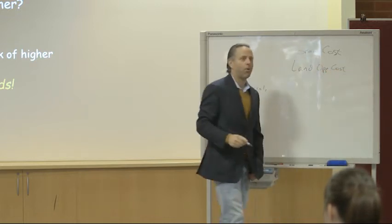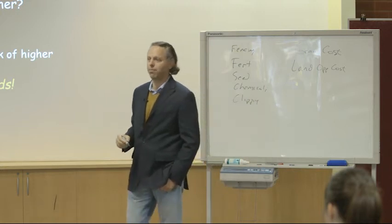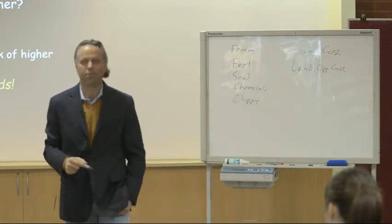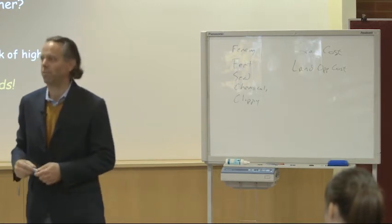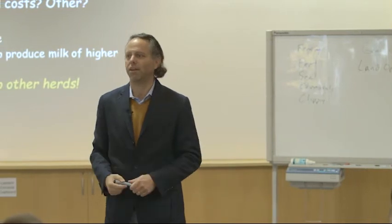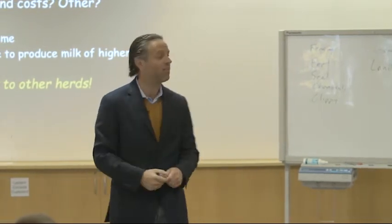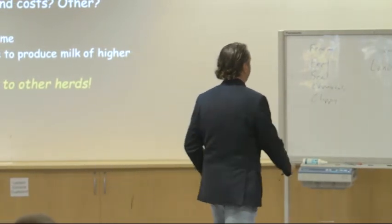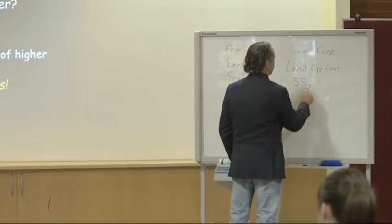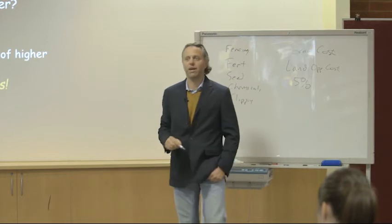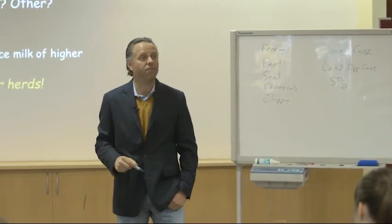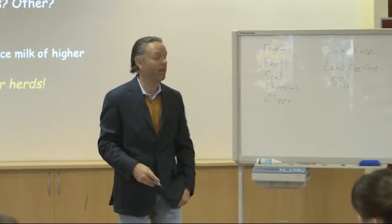Then the last one that you have to add is land opportunity cost. You probably have a significant amount of capital invested in that land, and if you're getting no return on that capital, I think you're fooling yourself in your business — you're essentially using your capital for free to generate income from your dairy. I think a 5% return is a reasonable place to be. Take the value of your land, add 5% to it and include that as a feed cost.